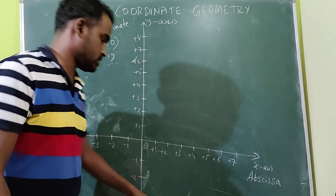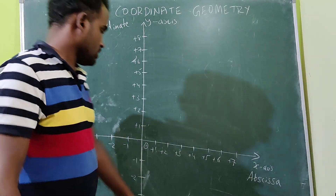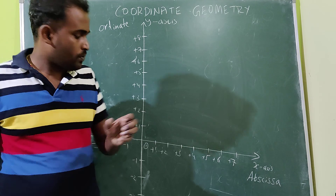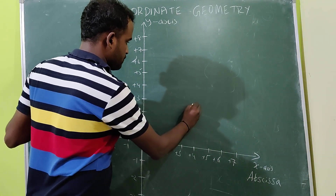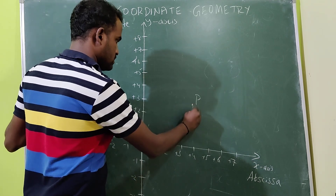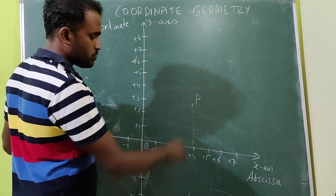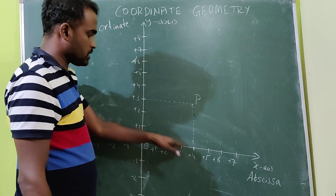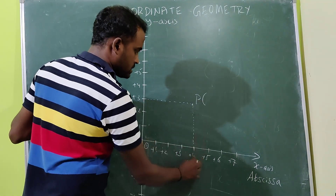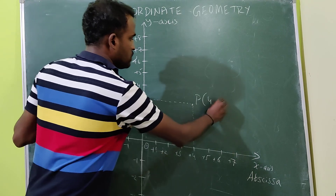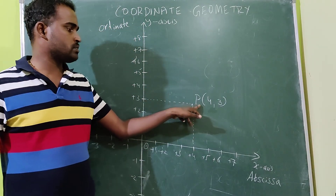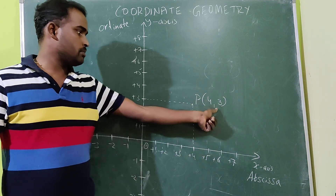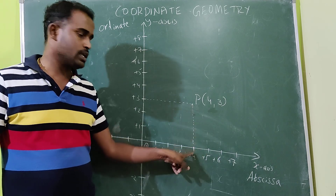Very, very important question — even in 10th standard they will ask. Write the coordinate of the origin: origin coordinate is (0, 0). Now let us consider a point P. Let us draw a line segment towards the x-axis and another towards the y-axis. By observing this point, x equals 4, y equals 3. Therefore the coordinates of point P are (4, 3) — 4 is the x-coordinate, 3 is the y-coordinate. Without drawing dotted lines also, you can represent it.